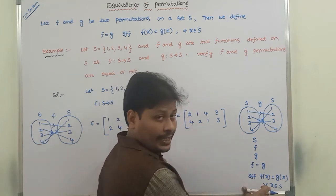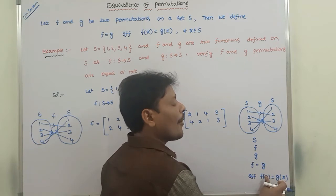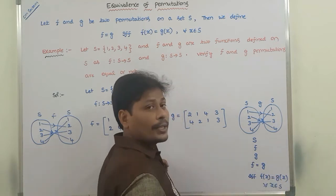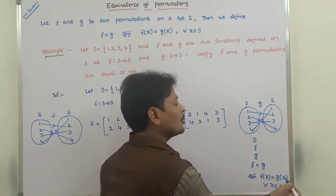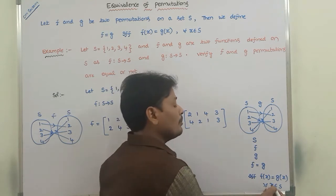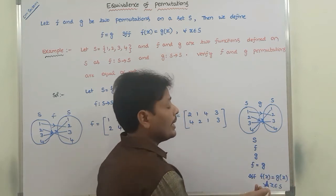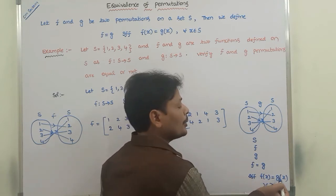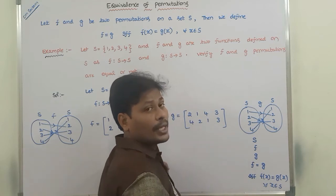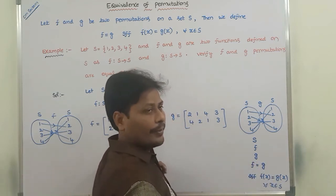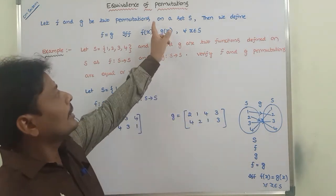We can take any element x of S. The image of x through function F is equal to the image of x through function G. That means the image of x in F is equivalent to the image of x in G, for all x belonging to S. Whenever this condition is satisfied — we can take any element in set S and the image of x in F equals the image of x in G — we say that permutation F is equivalent to permutation G. This is the definition: let F and G be two permutations defined on a set S.